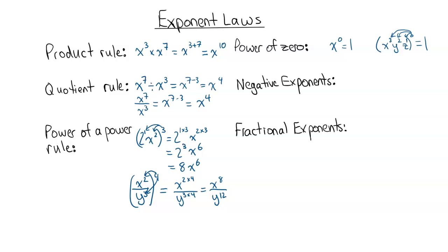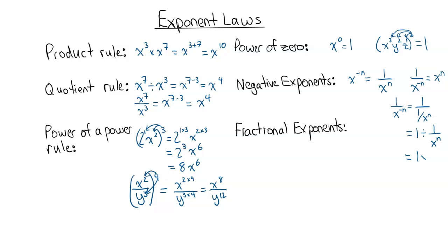Negative exponents is the next one. If I have something to a negative power, then it becomes one over that to a positive power. Likewise, if I have one over X to the power of negative N, that would become the reciprocal — X to the power of positive N. The reason: one over X to the power of negative N equals one over one over X to the N, which is one divided by one over X to the N, which is one times X to the N over one, and you get X to the power of N.